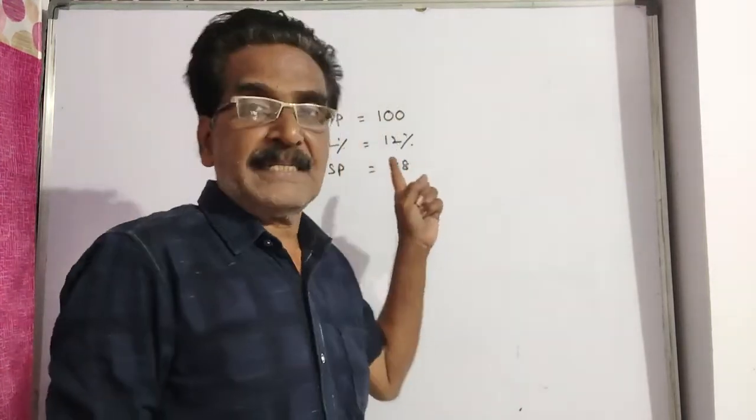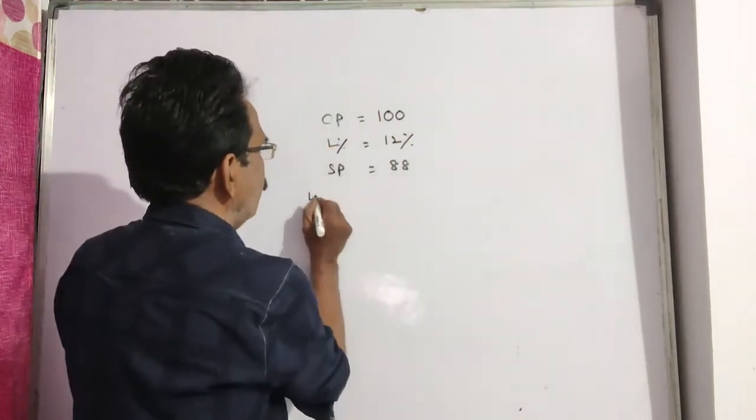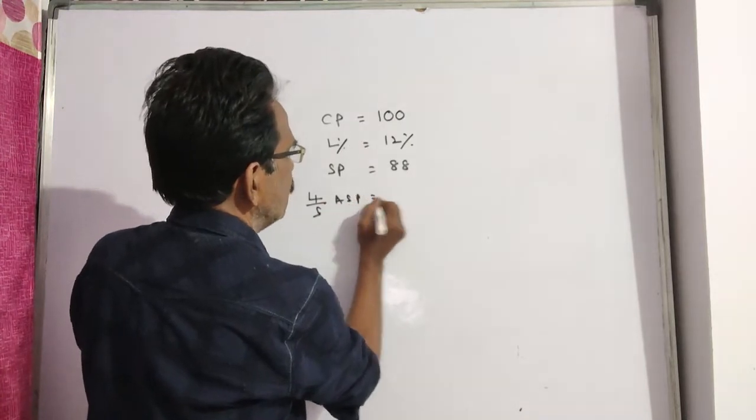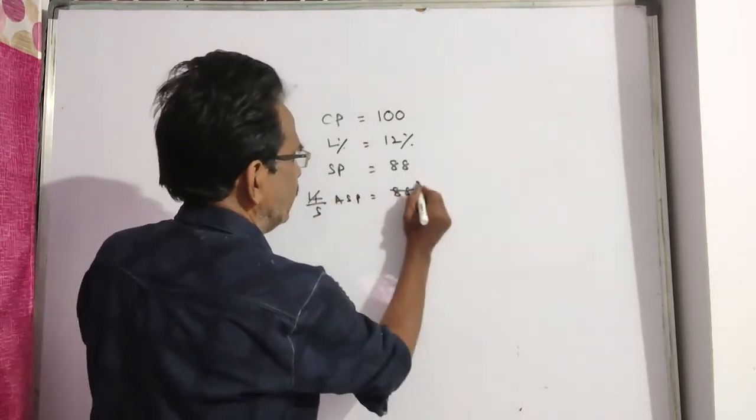Friends, this sold price of 88 is four-fifths of the actual selling price. So four-fifths of the actual selling price equals 88.